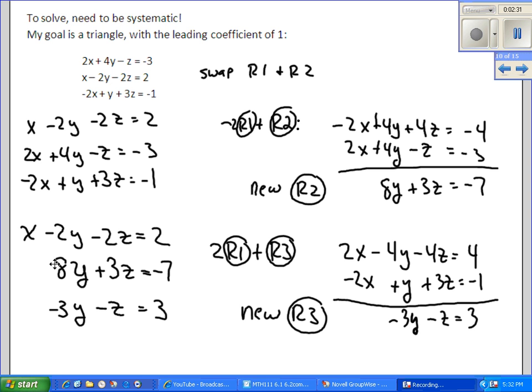And so when I rewrite the system here, I still have my equation 1, my new equation 2, and my new equation 3. I'm kind of working towards this triangle. My next goal is going to be to try to eliminate this y here so that I've got an equation with 3 variables, an equation with 2 variables, and an equation with only 1 variable. That's my goal.